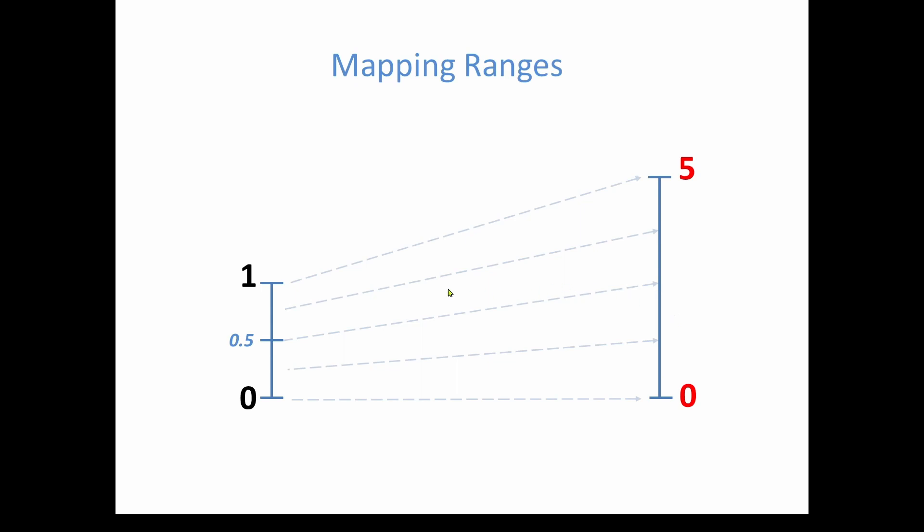So now if you look at this, let's say we want to take this 0.5 input value and map it to the output. And just by inspection, you can probably come up with the answer, right? This 0.5 is halfway between the 0 and the 1, and the output is from 0 to 5. So to map this proportionally to the output, you'd say, well, what's half of 5? That's going to be 2.5.